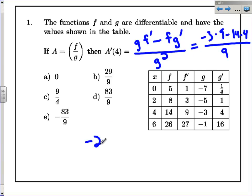So let's scoot on down here and see what this is. Negative 3 times 9, that's negative 27. 14 times 4 is 56 all over 9. So that is negative 83 over 9. And so our answer is e.